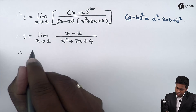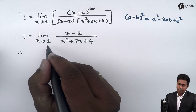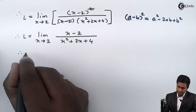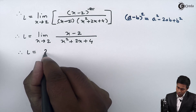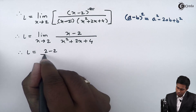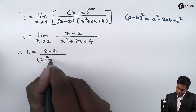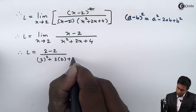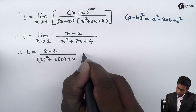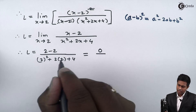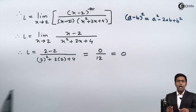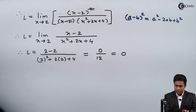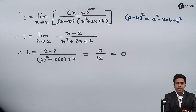Applying the direct method now, we substitute x=2: L = (2−2)/(2²+2·2+4) = 0/12. The numerator is 0 and the denominator is 12, so the answer is 0. Hence the value of L is equal to 0. Thank you.